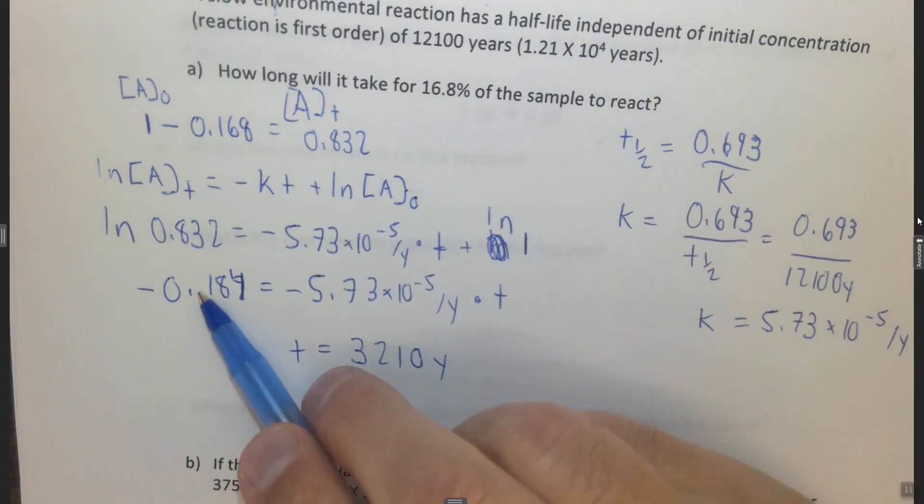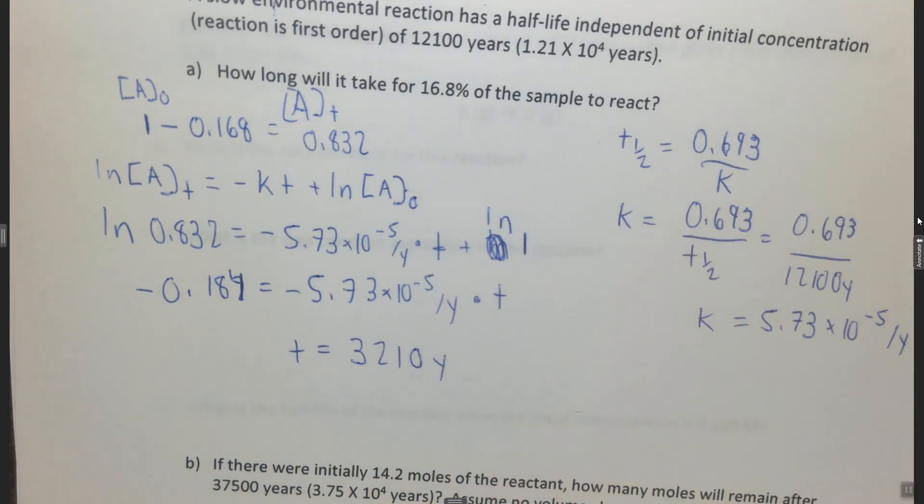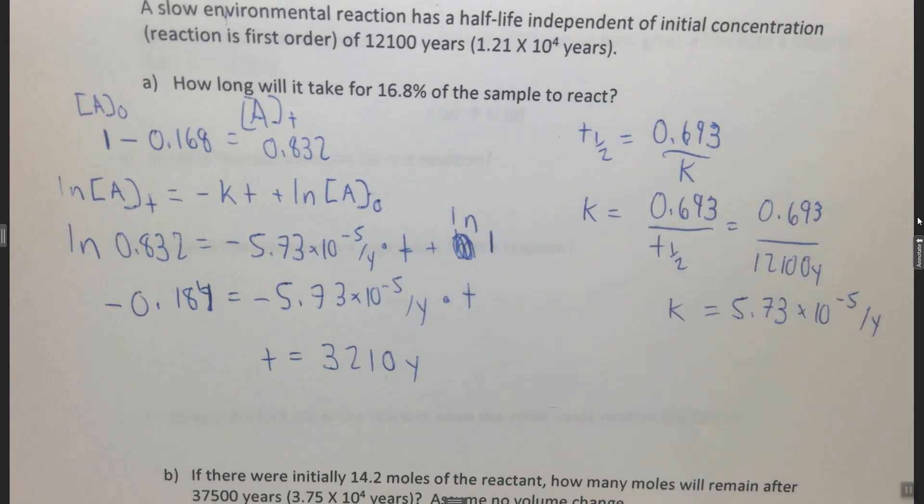Note that I went to three sig figs because everything here has three significant figures. If you get a slightly different number because it rounded differently, don't worry about that. Sig figs aren't going to be really an issue in questions like this where the math is so complicated.